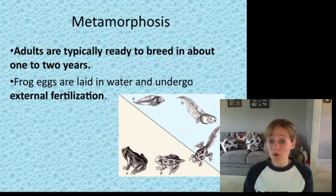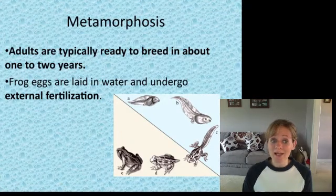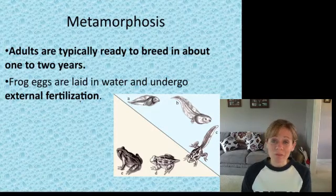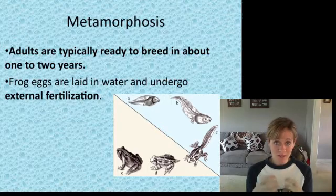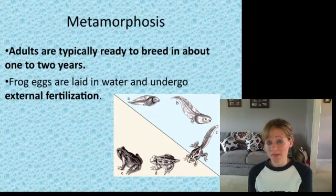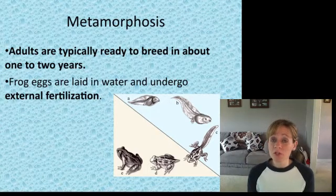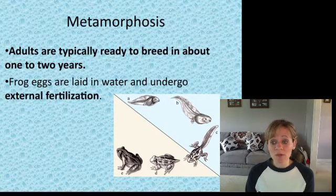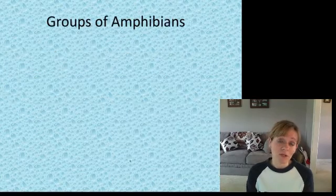Adults are typically ready to breed in about one to two years, and frogs use external fertilization. Amphibians are a transitional animal — part of their life cycle still relies on water and part relies on land. Fertilization is one of the parts still relying on water, just like fish. Tadpoles develop in the water and swim, but eventually turn into the land-dwelling frogs we are most familiar with.